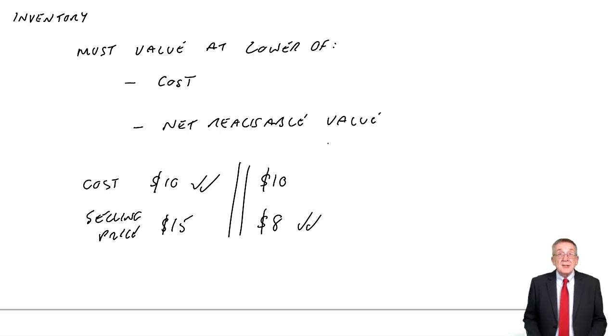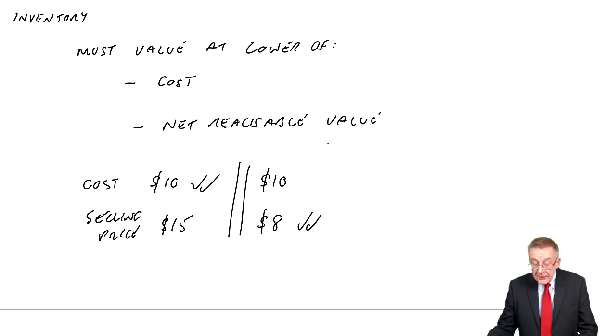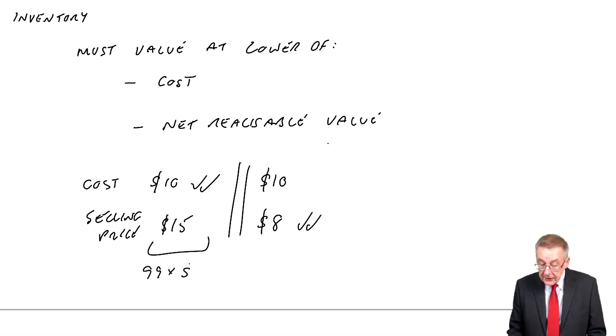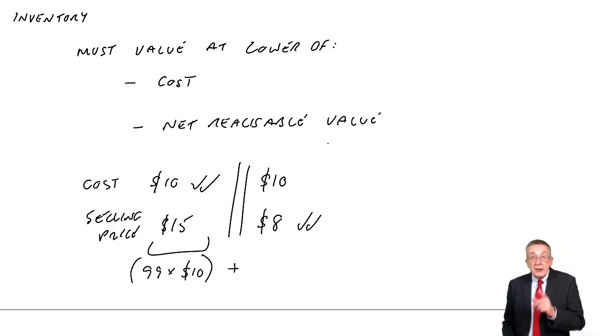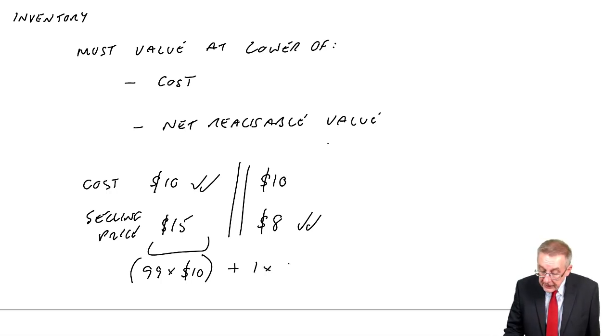If I have 100 desks in inventory, if 99 of them are okay, those 99 would be valued at $10. But if the other one is the damaged one, and I'm going to sell cheaper, that one would be valued at $8. You must value at the lower of the two.